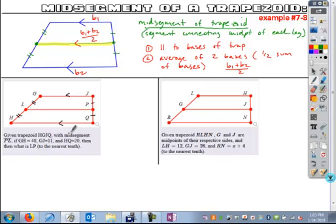So if you know that GH is given as 48 and GJ is 11 and HQ is 20. The fact that GH is 48 doesn't have anything to do with the problem.